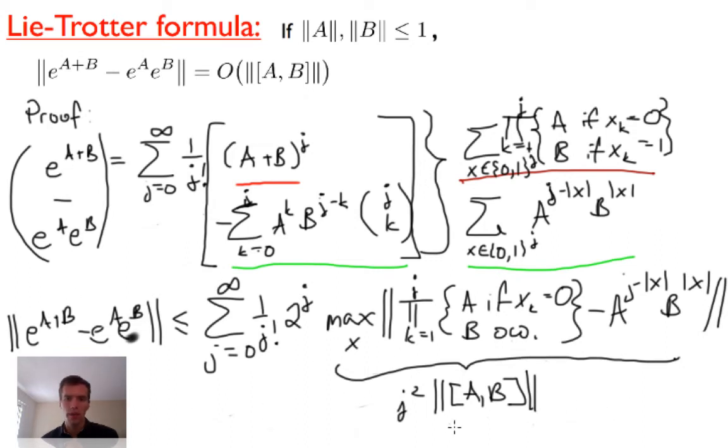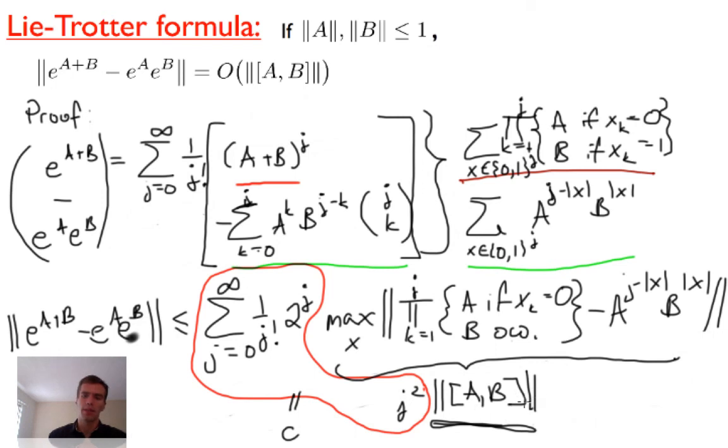Here we are, we're actually done now. We can factor out this norm of the commutator, and we get the sum from J=0 to infinity of 1 over J factorial times 2^J times J². This sum times the commutator, and I don't know what this is, but it's a convergent series because the J factorial term dominates. Maybe it's 10, I don't care, it's some constant, and so all that matters is we get some constant times the norm of the commutator. We're done.